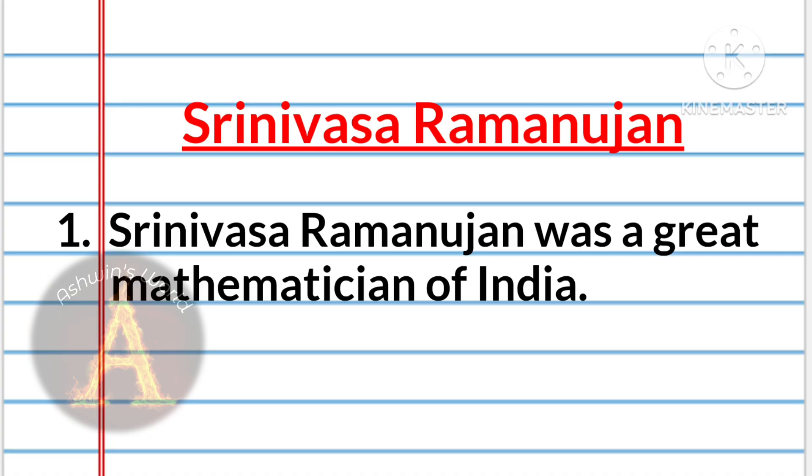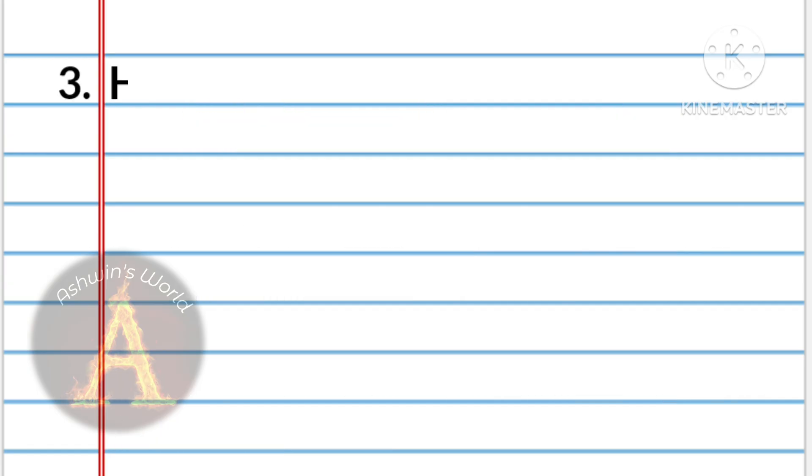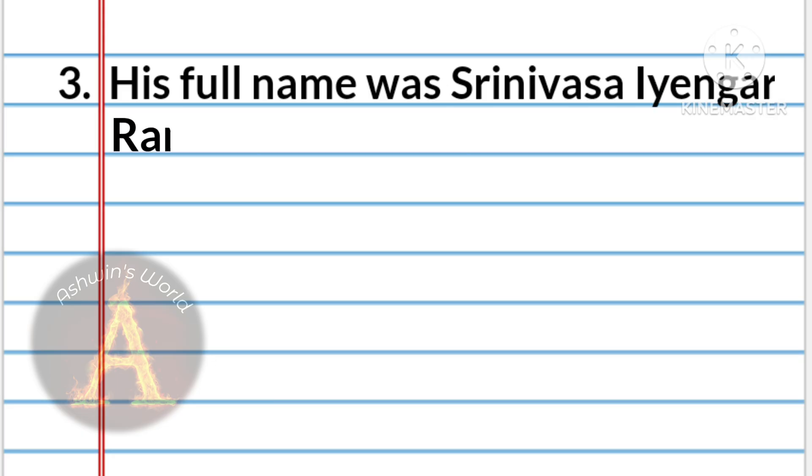Srinivasa Ramanujan was a great mathematician of India. He was born on 22nd of December 1887 in Erode, India. His full name was Srinivasa Iyengar Ramanujan.